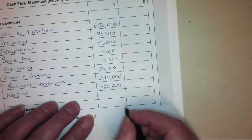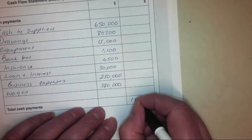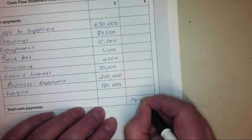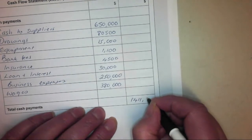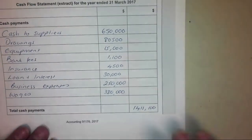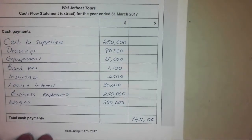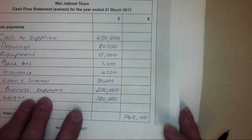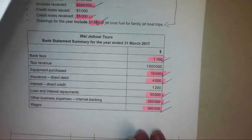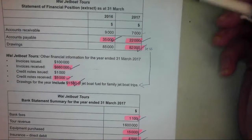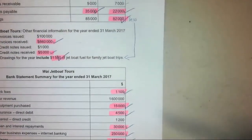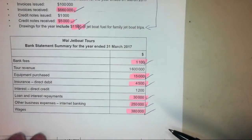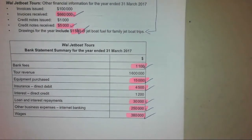If I add all those up, my total cash payments comes to $1,411,100. And that is your cash payments section of the cash flow statement done. Just a final check that you have now ticked off all the information as you've used it — there's no outstanding information that hasn't been used, so I know that I've got full disclosure of payments in my answer.